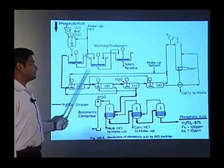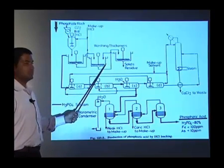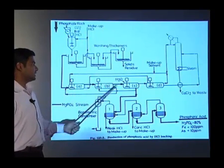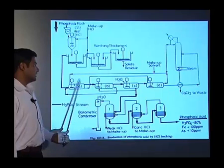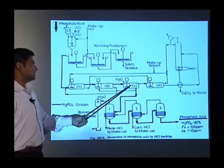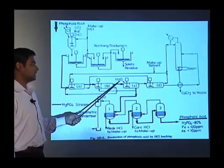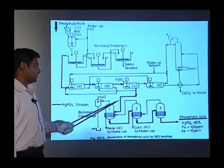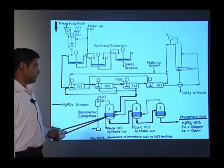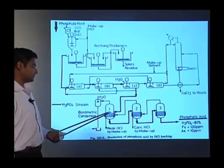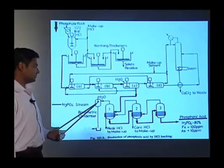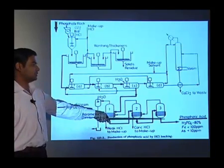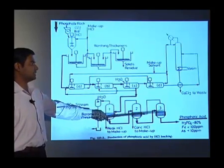Here we are digesting the mixture for some time and then feeding it to the mixer settler, where in C we get the phosphoric acid extracted in water. Then we feed it to the evaporators, where we can recover the solvent back and have phosphoric acid which is 80 percent concentrated.